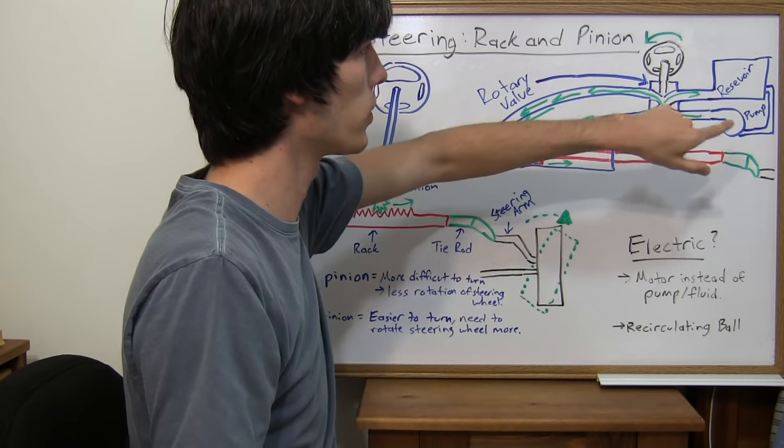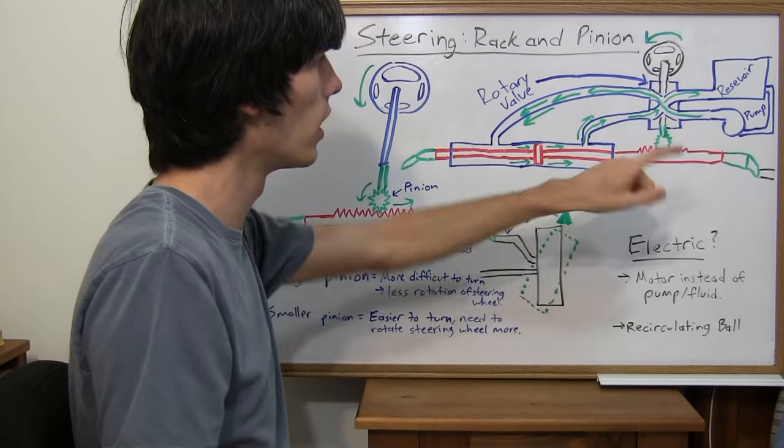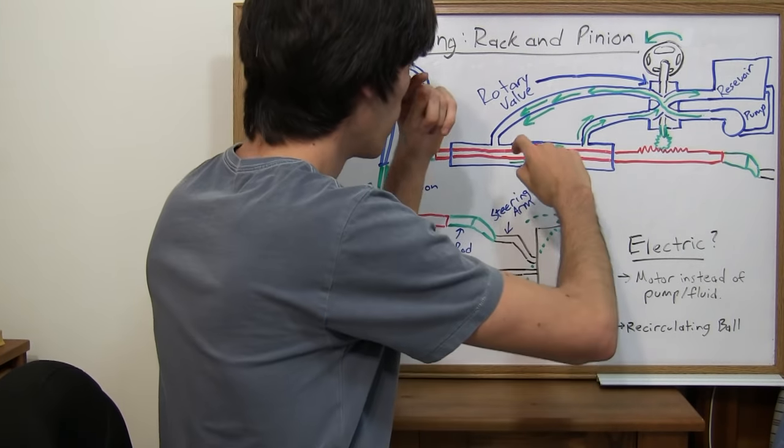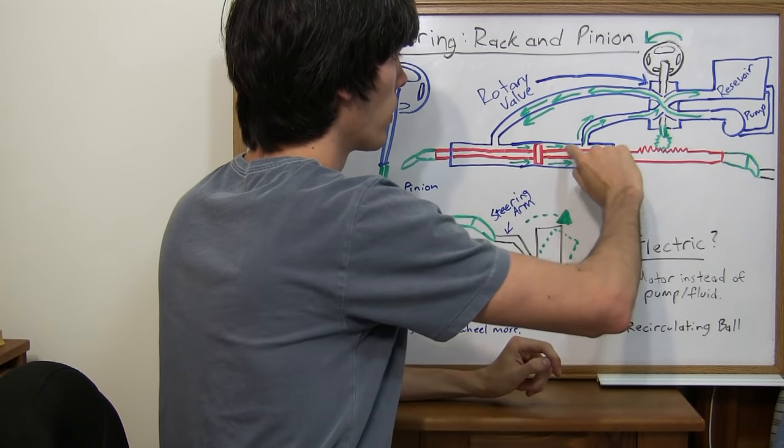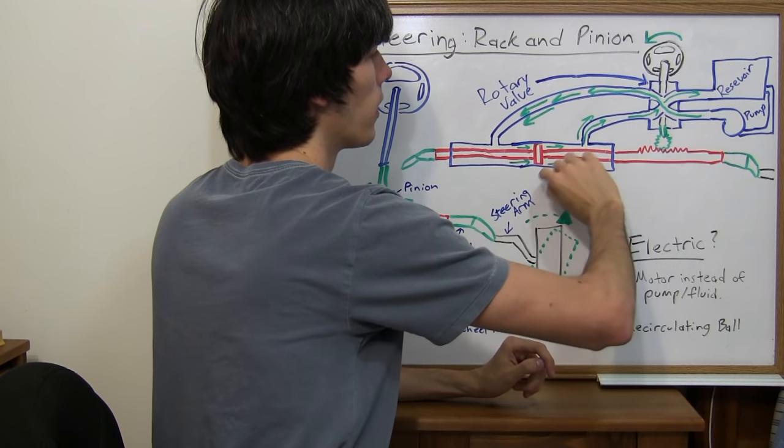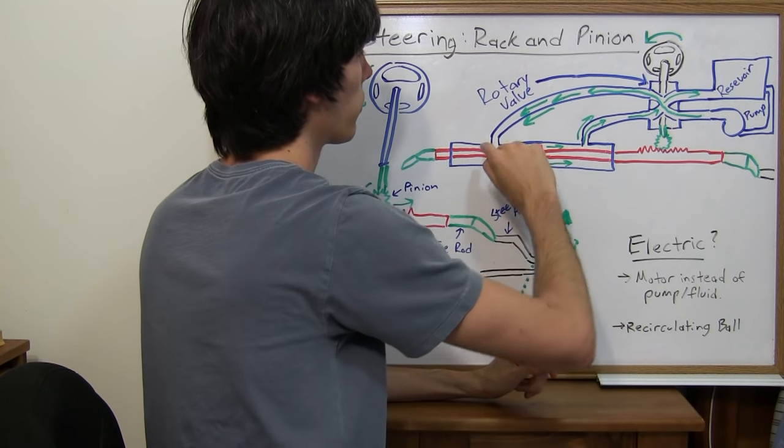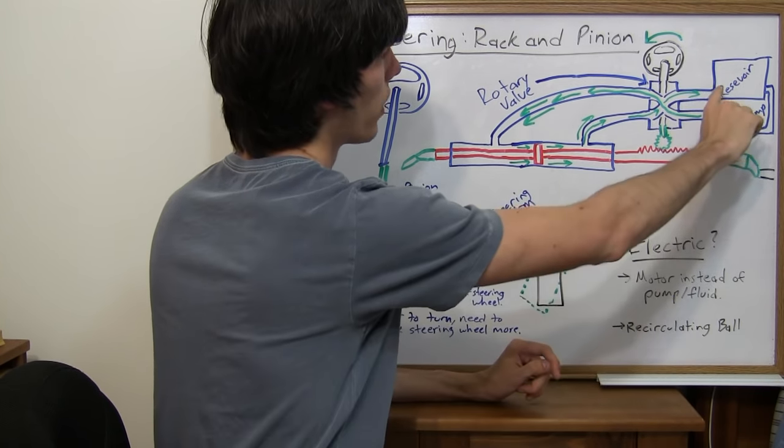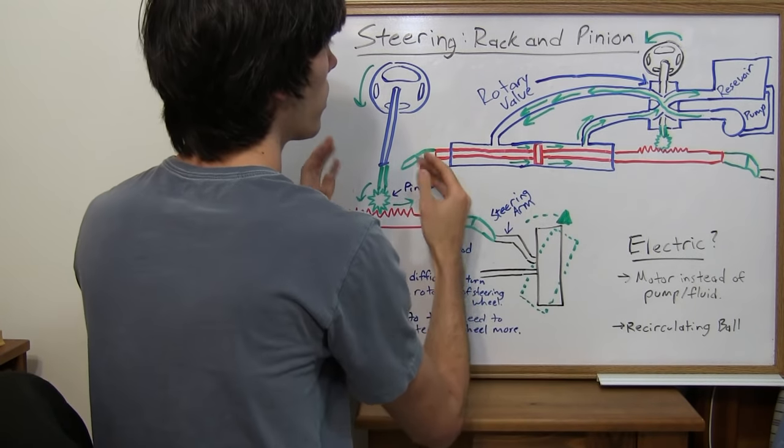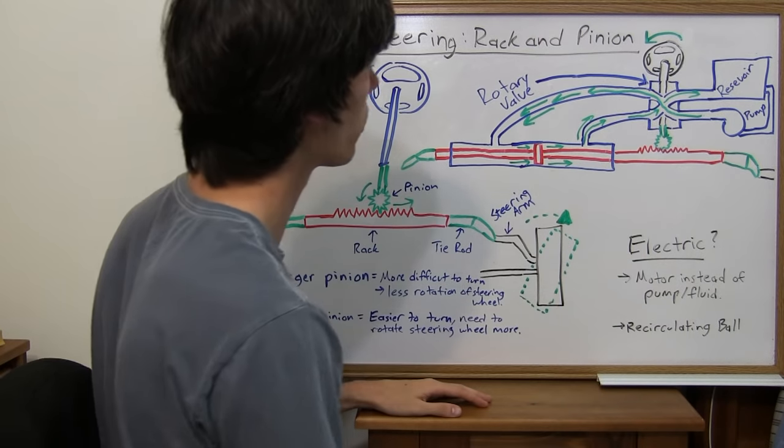Now if you were to change it around and turn your wheel to the left, well this awesome rotary valve would simply just switch the directions that things flow. So instead of the fluid flowing from the right side of the piston cylinder area right here to the reservoir, it would flow from the left side to the reservoir, and then the pump would flow into the right side, and so that would force it that direction and then your tires would turn the other direction.